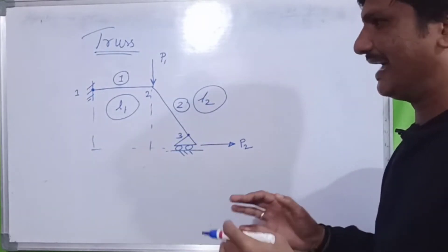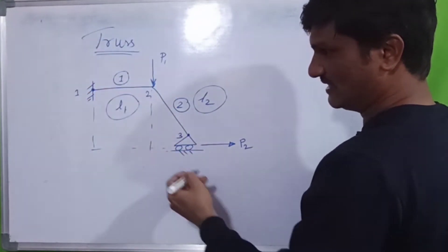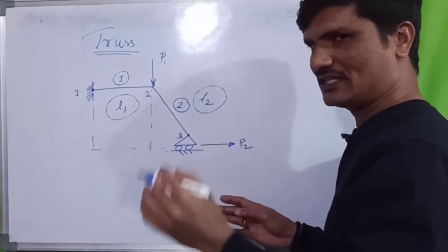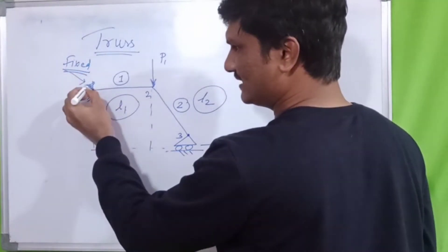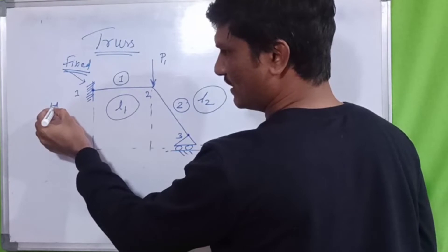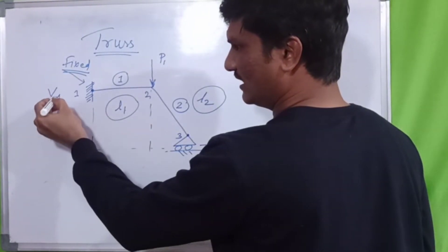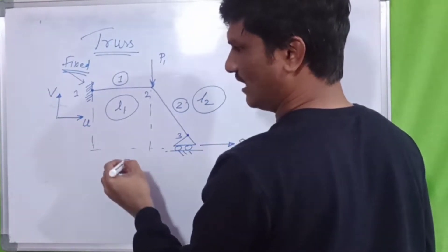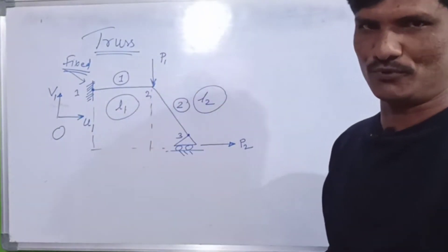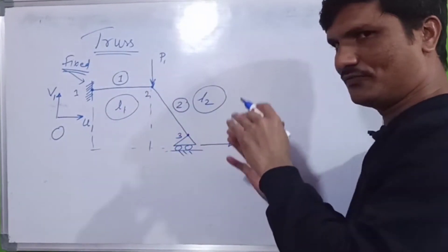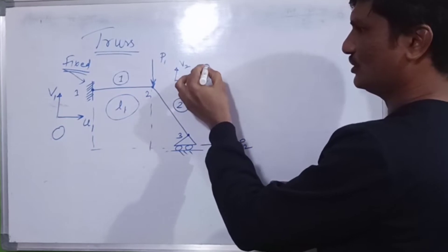After calculating the forces, check what are the fixed elements. When there is a fixed support — a rigid fix — the vertical displacement V and horizontal displacement U will both be zero at that node. U is horizontal and V is vertical. So both will be zero at that point because it is a rigidly fixed support. When you come to node two, it is free, so there will be unknown values U2 and V2 that you have to calculate.